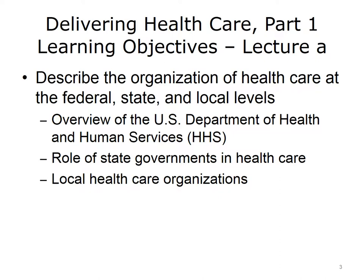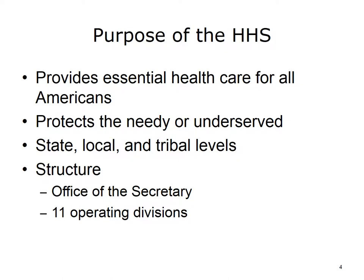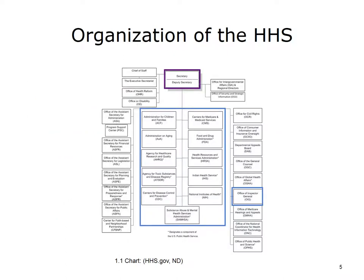This first lecture describes the organization of healthcare at the federal, state, and local levels, including the U.S. Department of Health and Human Services, or HHS, state governments, and local healthcare organizations. The HHS is the federal agency that oversees healthcare for all Americans, focusing on helping citizens who are needy or underserved. Services are generally provided at the state, local, and Native American tribal levels. The HHS is run by the Office of the Secretary and includes 11 operating divisions. The structure of the HHS is complex, with the Office of the Secretary at the top overseeing all operations, and 11 operating divisions outlined in blue.